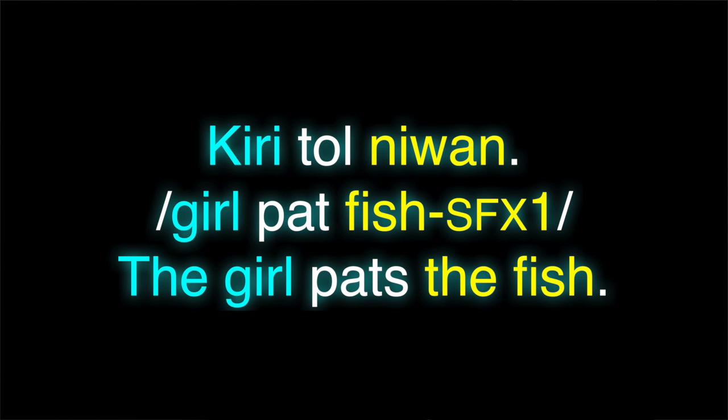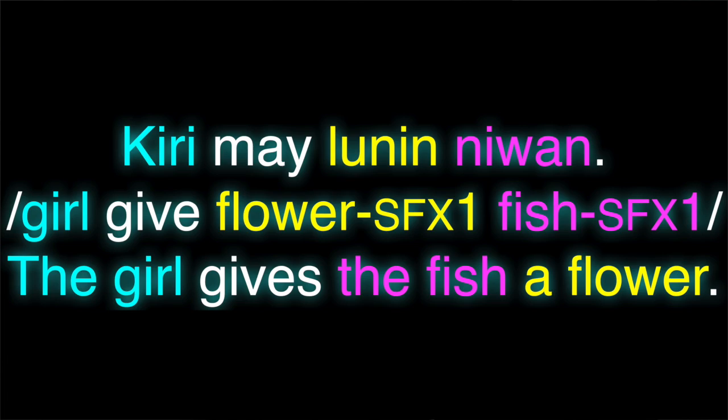Now let's move on to a different one. This strategy is a little interesting and also not super common. Let's look at our control clause: 'Kiri tol niwaan' — the girl pats the fish. This is exactly like our Latinate example — we see the direct object getting an accusative marker and the subject not getting any marking at all. Now let's look at the ditransitive clause: 'Kiri mai luni niwaan.' Notice what happened here — there's no dative in this at all. Instead, both the direct object and the indirect object get the exact same marking, this accusative marking.